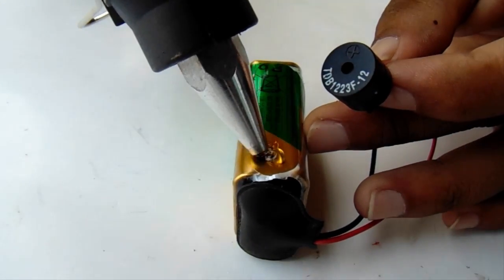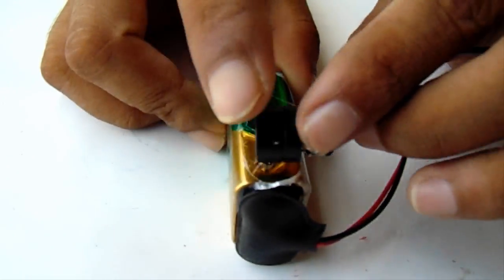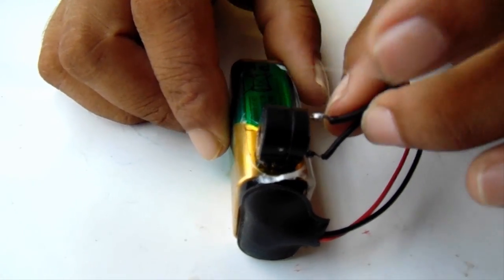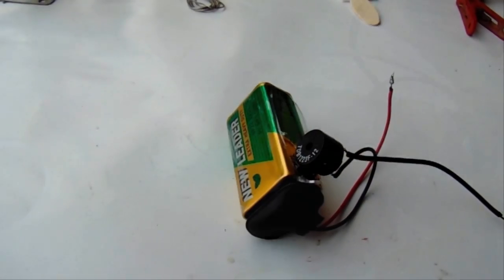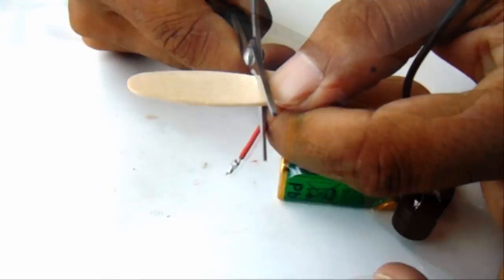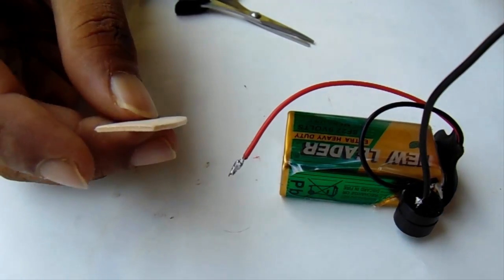Now attach the buzzer on the battery. Cut down the ice cream stick and take one part.